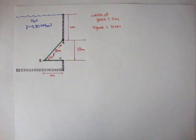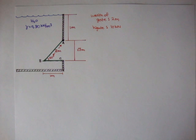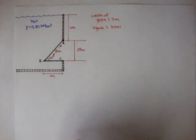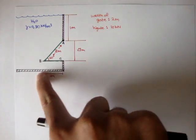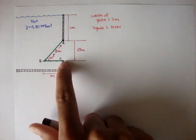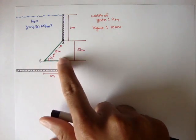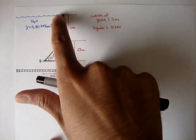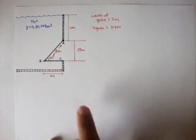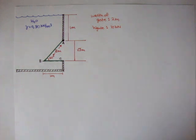All right, let's look at another example for forces on planar surfaces. Here we have a submerged scenario. We have rigid walls, these black lines here, and this green thing is actually one solid piece of gate. The water, this is all water, and its specific weight is 9.8 kilonewtons per meter cubed.